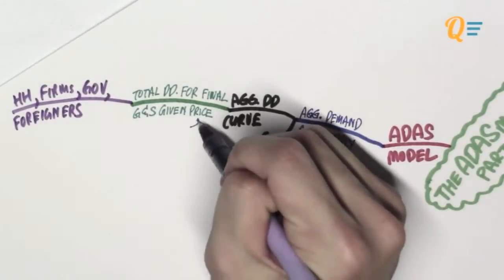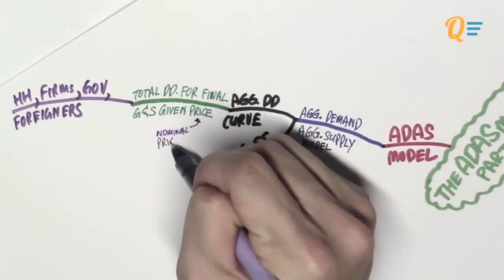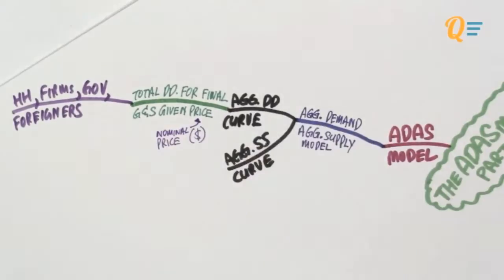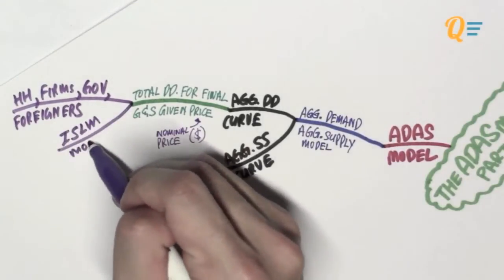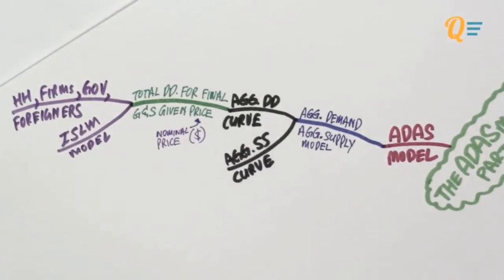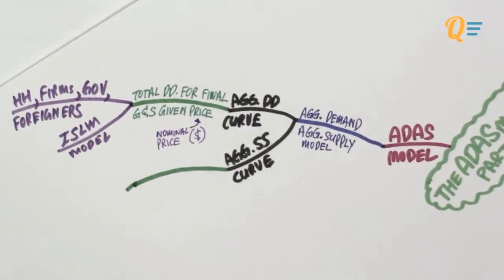When I say the price level here, I'm actually referring to the nominal price. Nominal price means that the price is given in terms of dollars. As you can see, the aggregate demand curve is actually very closely related to your ISLM model.